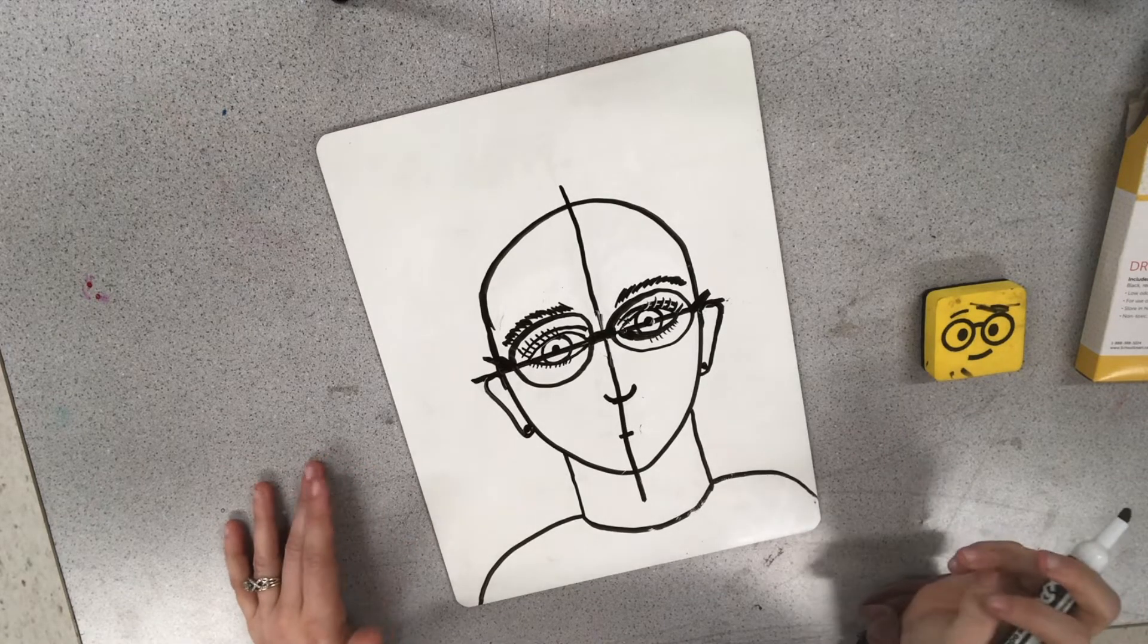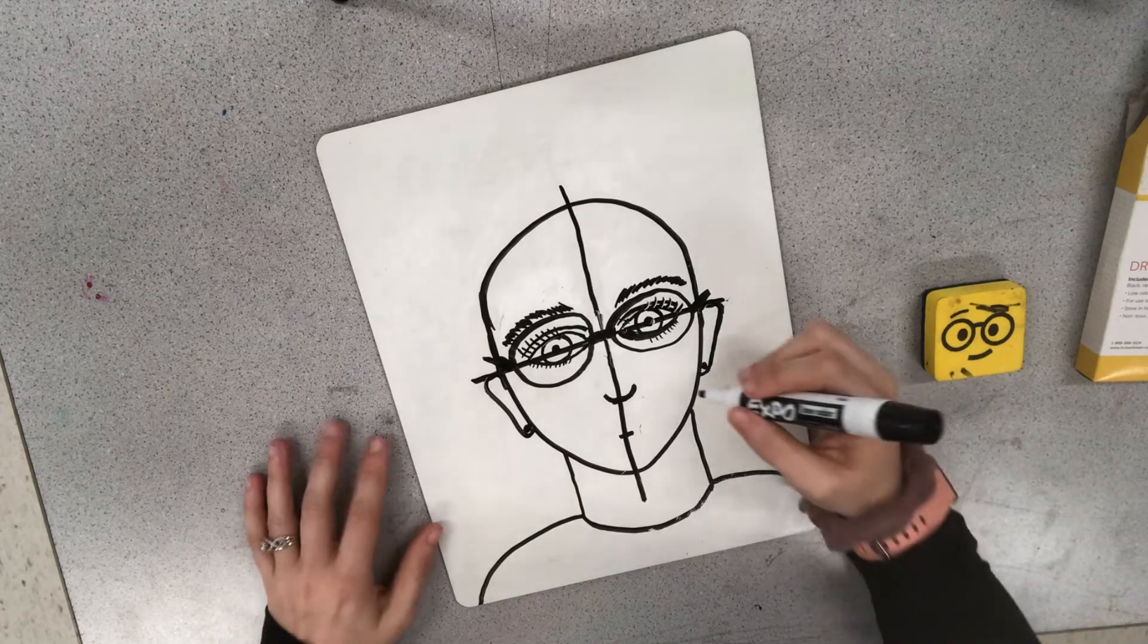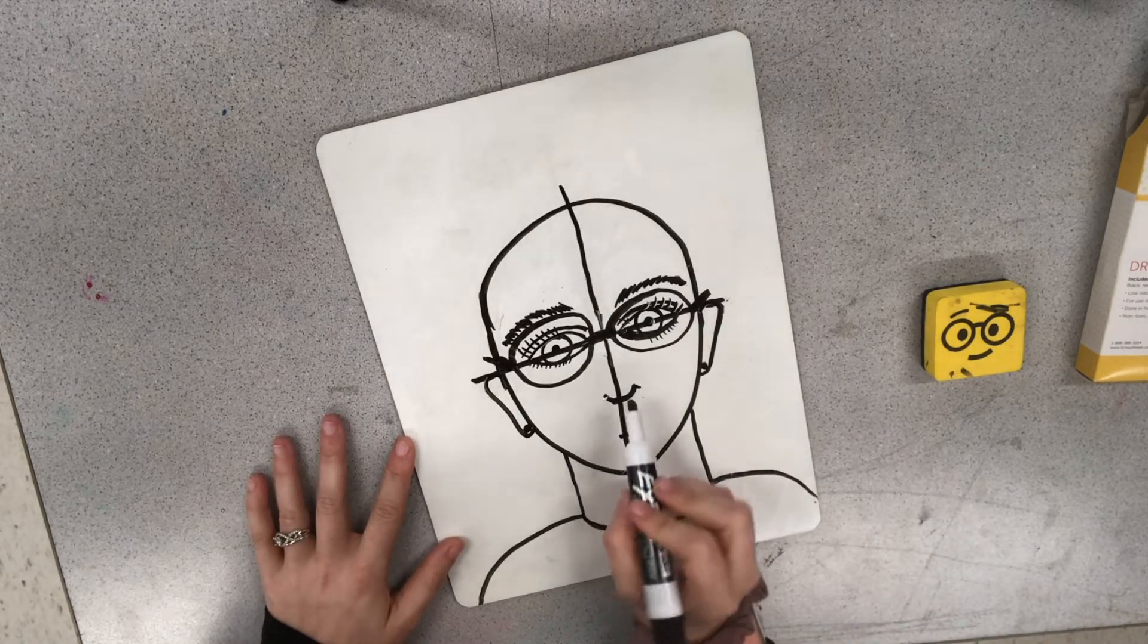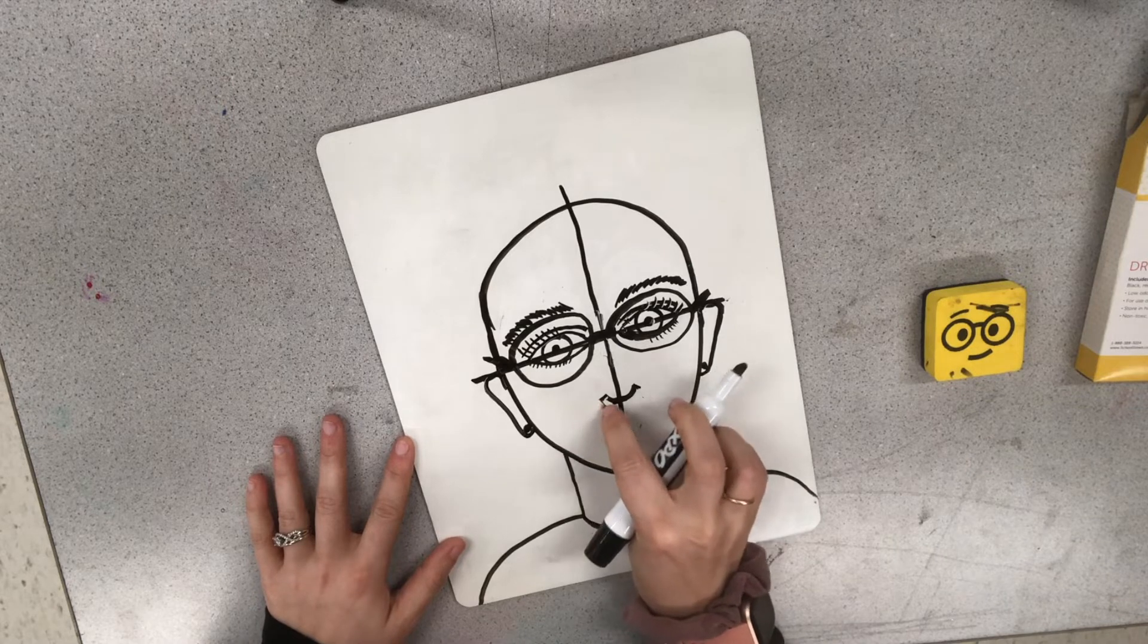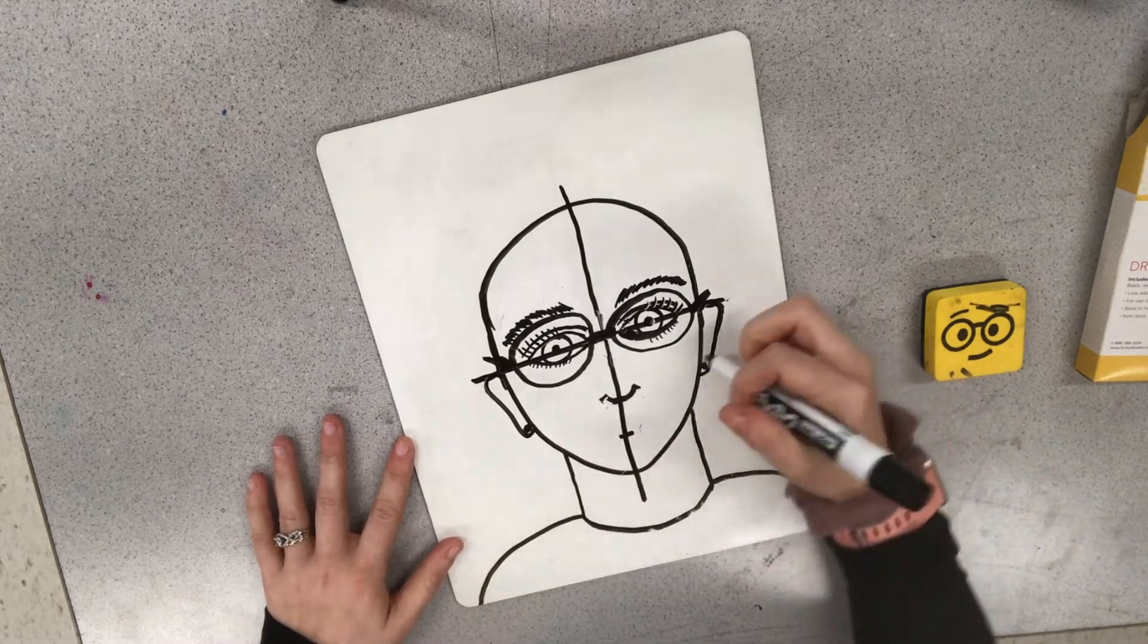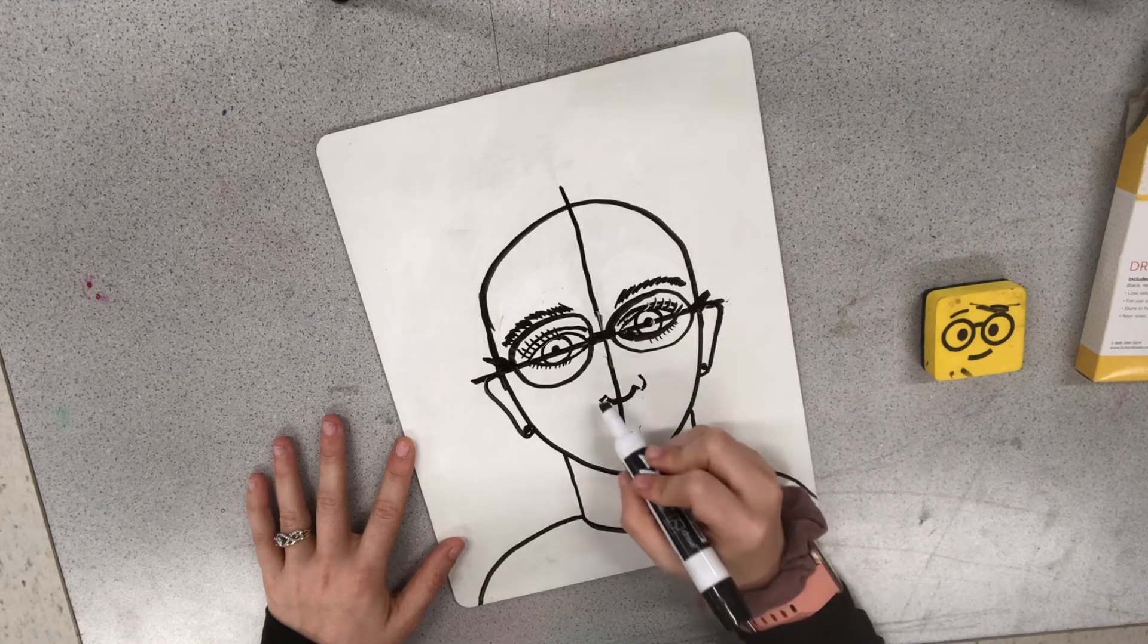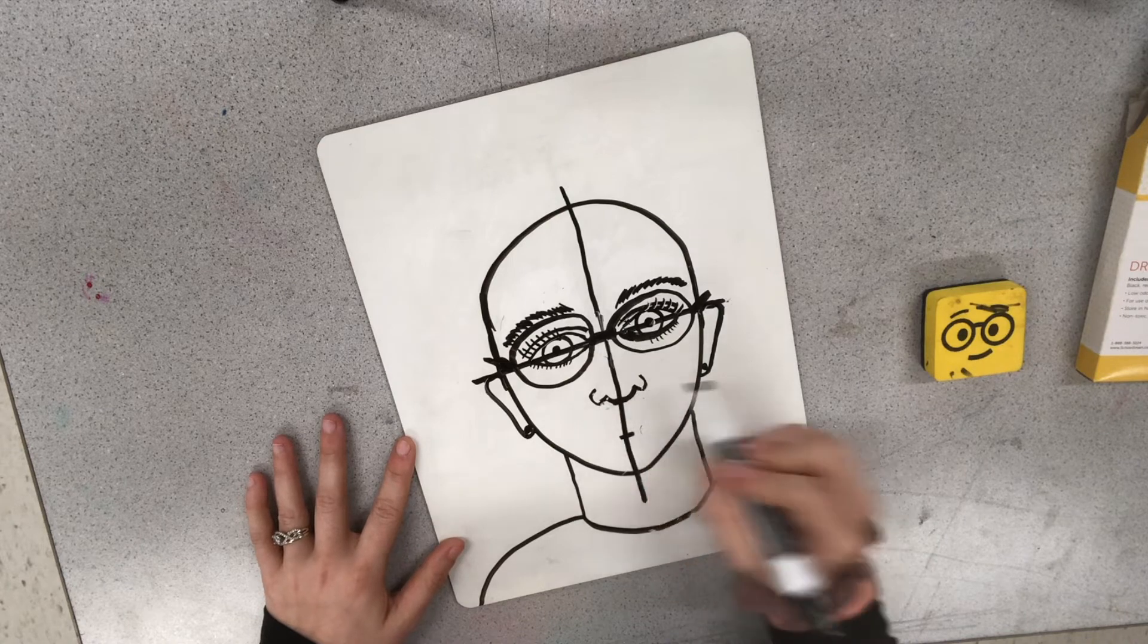Now if that's where you want to stop for your nose, that's totally fine. But we're going to try to make it a little more realistic, so we're going to add in a little more detail to it. So I'm going to add in a little line on each side coming off of that U. This is going to be the nostrils. And then we're going to add in the sides of our nose, which are kind of like a C and a backwards letter C on each side.